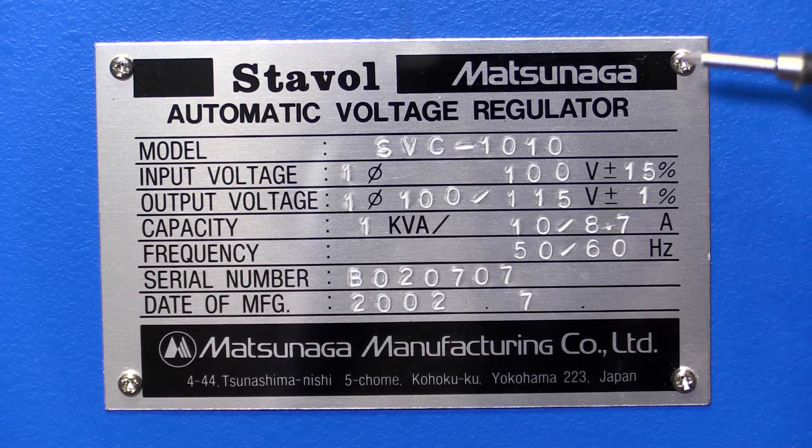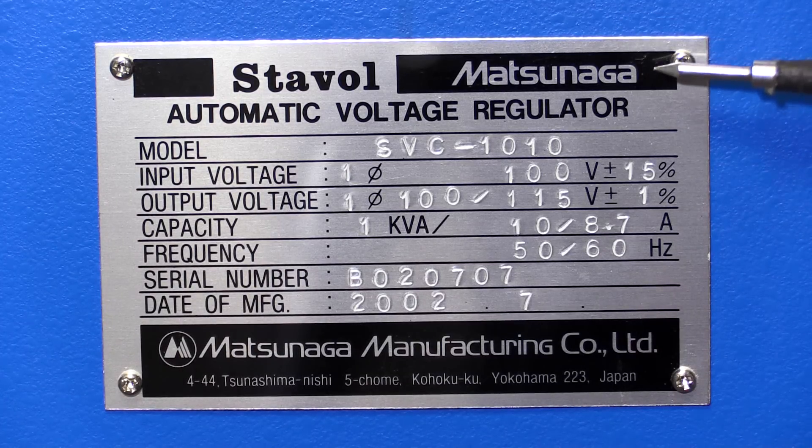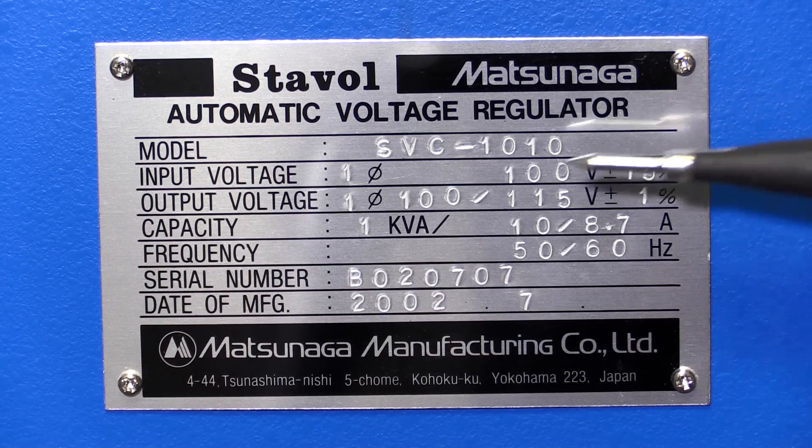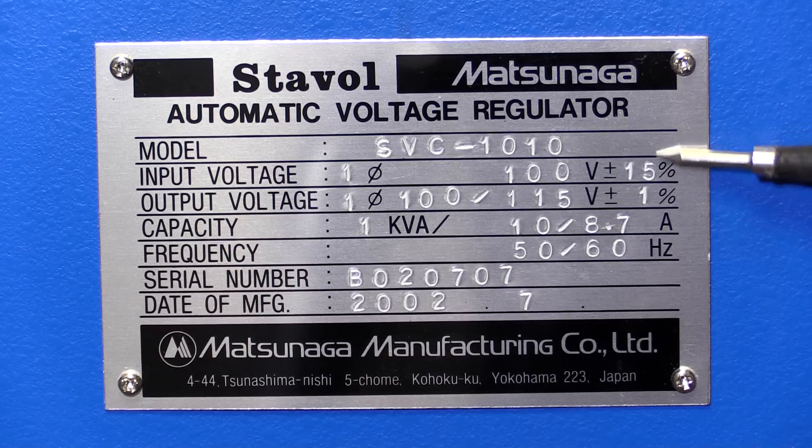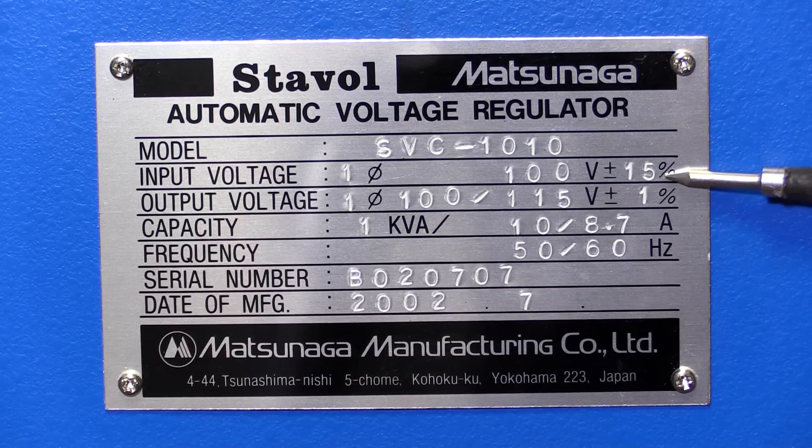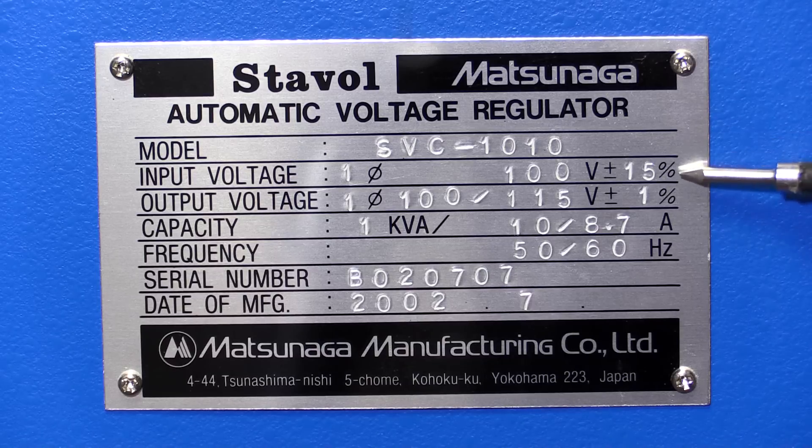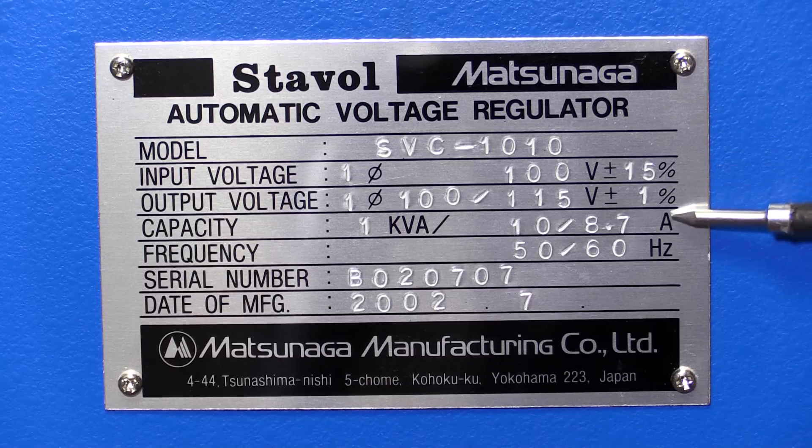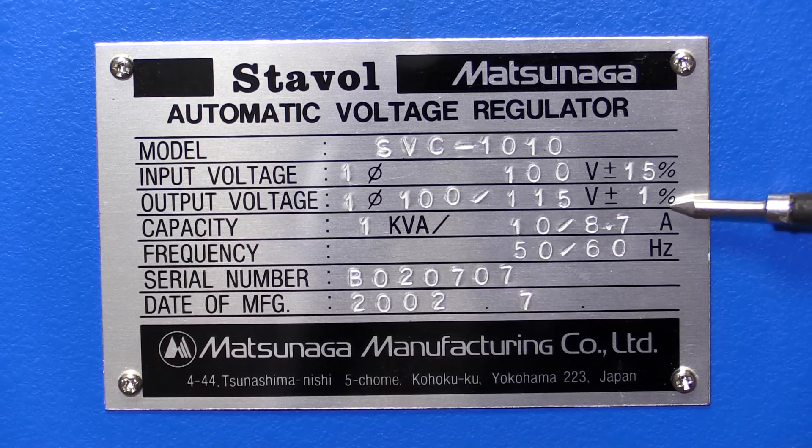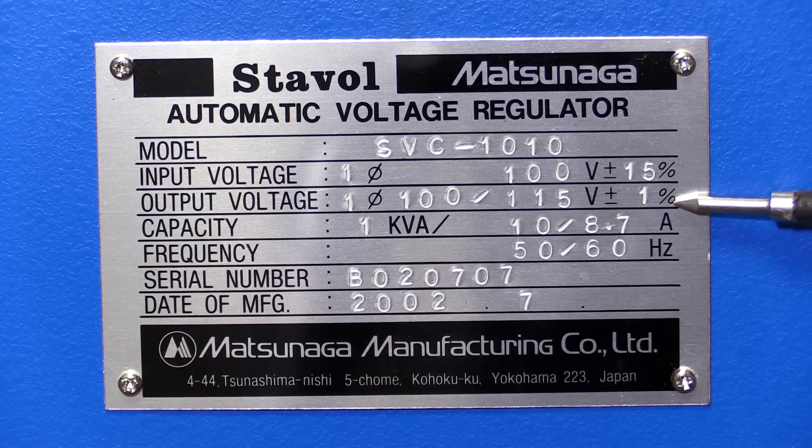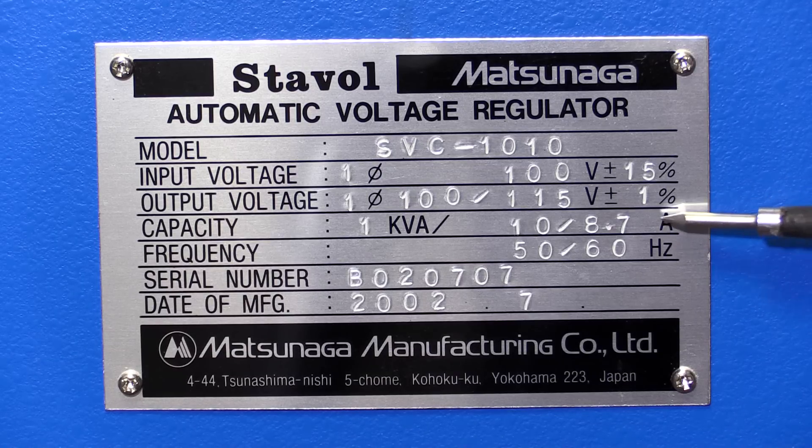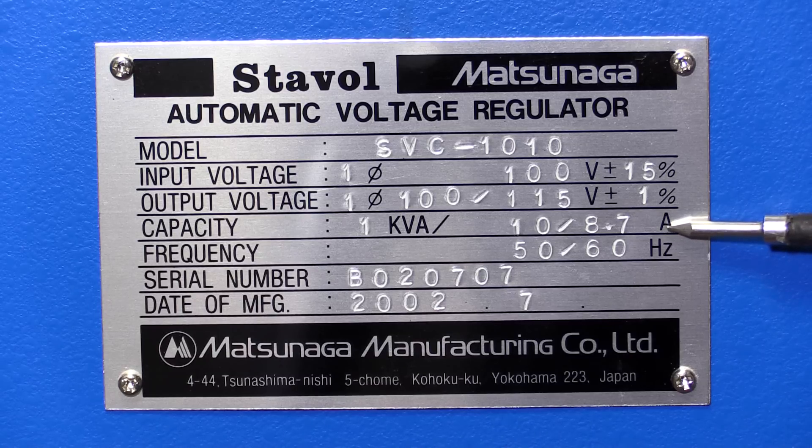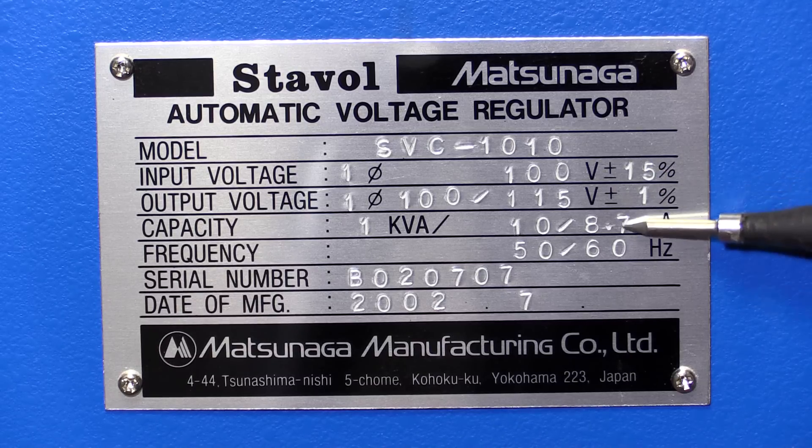So here we've got the data plate on the back. It's a Matsunaga brand, automatic voltage regulator, SVC-1010, input voltage 100 volts plus or minus 15%, so you can go up and down by 15 volts, output between 100 and 115 volts plus or minus 1%, 1 kVA.